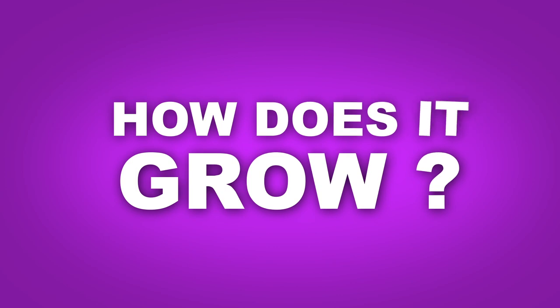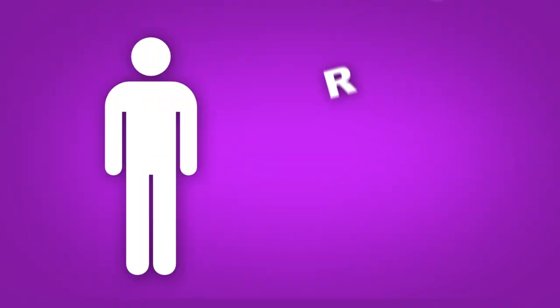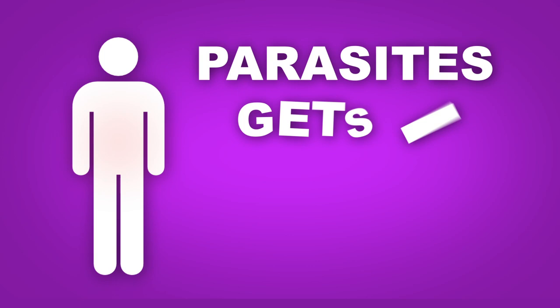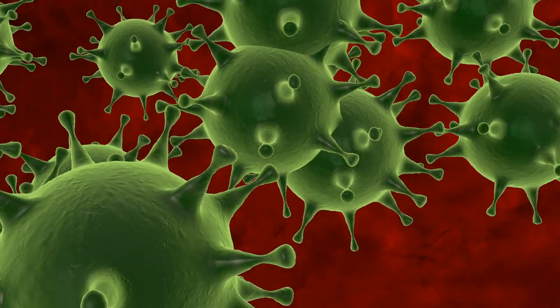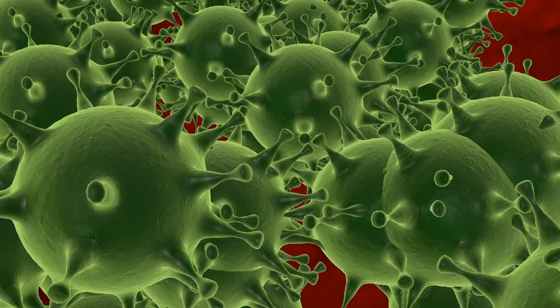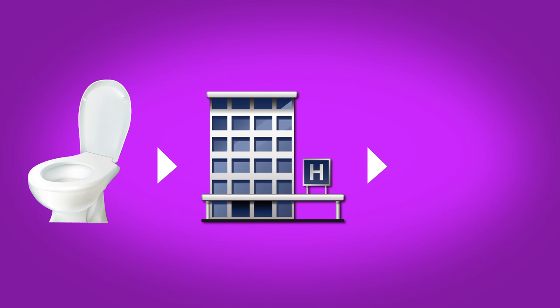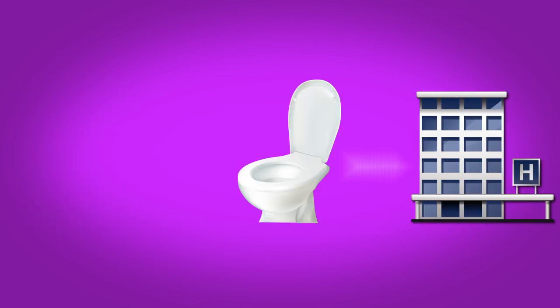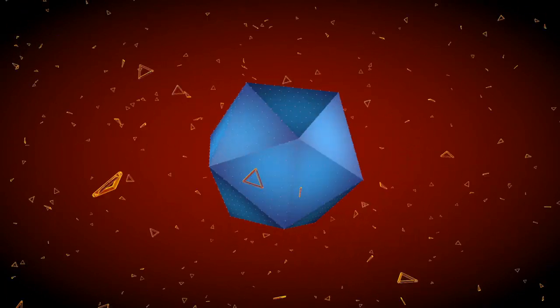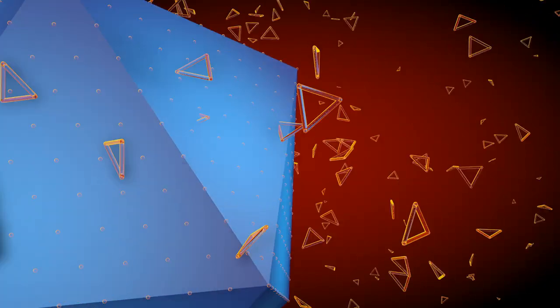How does it grow? Once the parasites get into our body, they multiply rapidly. Lack of personal hygiene and poor environmental sanitation can lead to worm infestation. They survive by eating the food we consume or by sucking our blood.